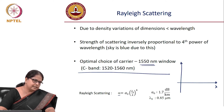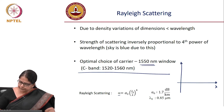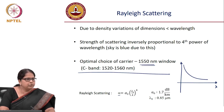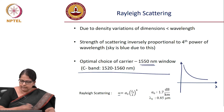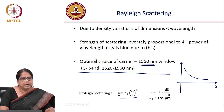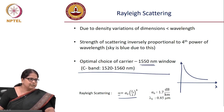As wavelength increases, 1/λ⁴ decreases, so scattering and loss decrease. The loss versus wavelength curve follows a 1/λ⁴ slope, and this empirical relation is derived from fitting measured data from real fibers.